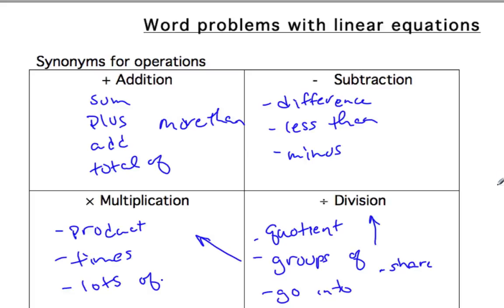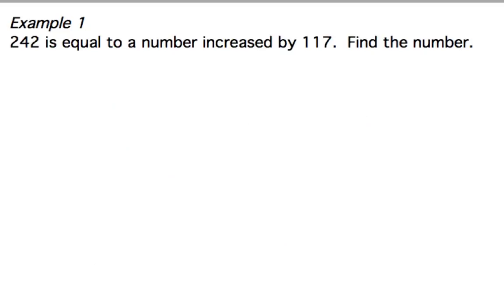Alright, so let's actually do some of these examples so that we can work through them. The first one is 242 is equal to a number increased by 117. Find the number. Well, let's assign it a variable, and one of the things I want you to make sure you do is you define your variables clearly. So let's say x, and we're going to say is the number.